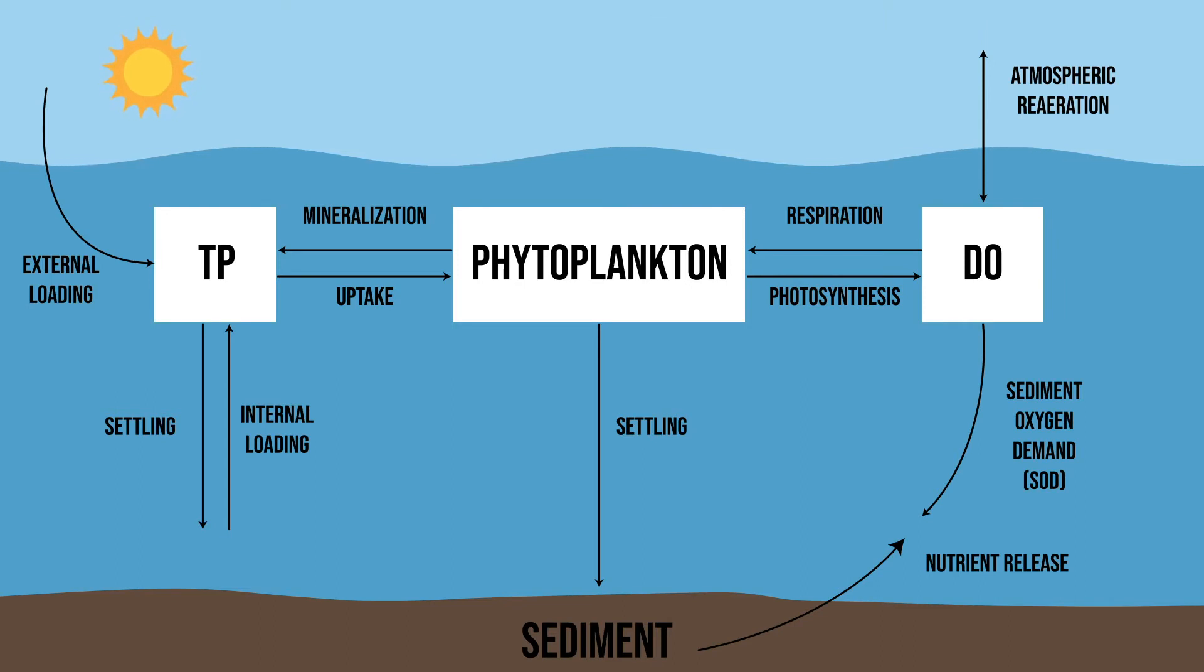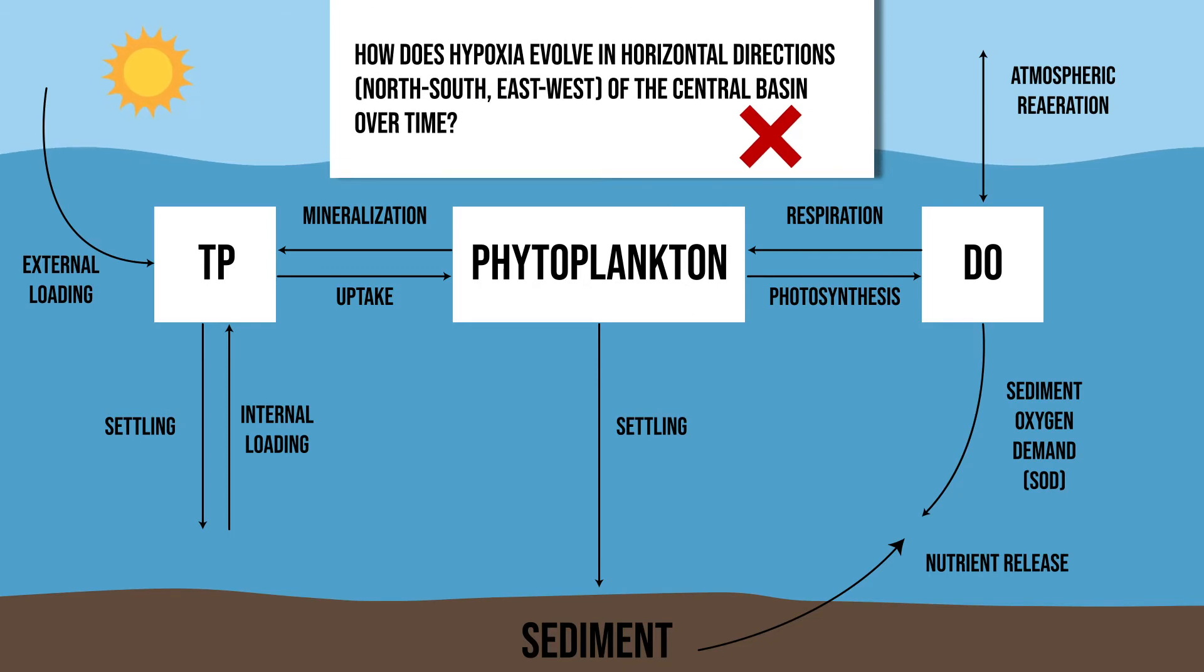No matter how much biogeochemical complexity you add to this 1D model, it will not answer questions like the following. How does hypoxia evolve in horizontal directions, either north-south or east-west, of the central basin over time? In this 1D vertical model, we can calculate the average concentration in each layer of depth, but we are not able to evaluate the oxygen gradients in horizontal directions.